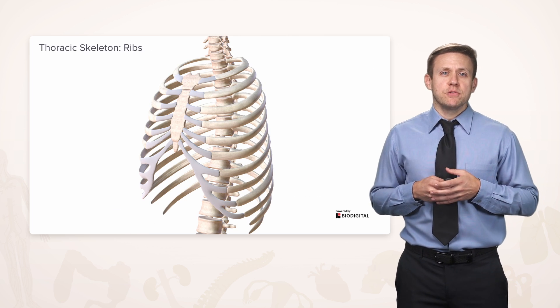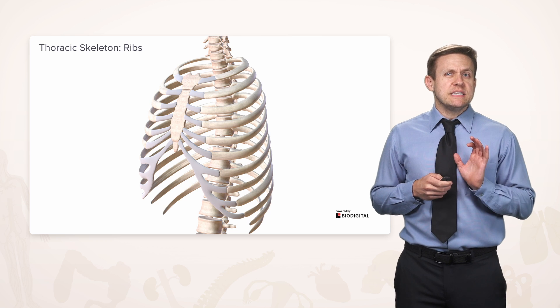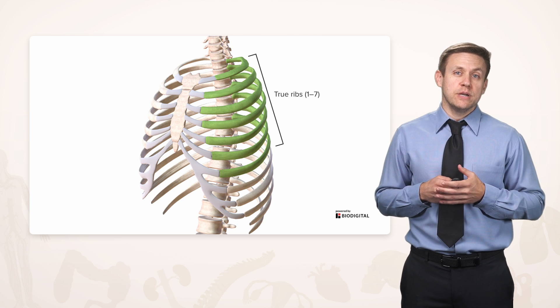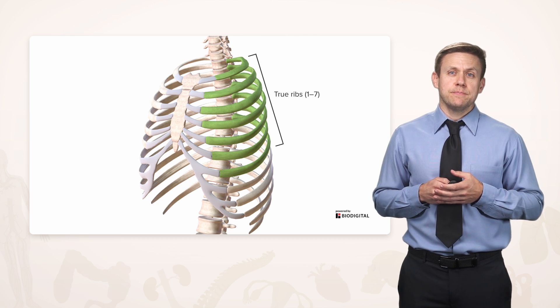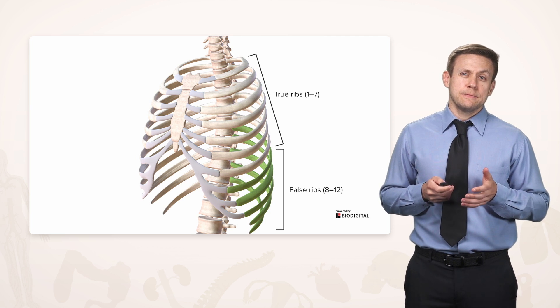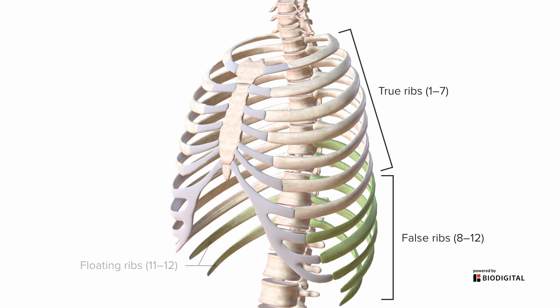Ribs are subclassified as true ribs if they are the 1st through 7th, because they attach directly to the sternum. Ribs 8 through 12 are false ribs because they don't attach directly. Furthermore, ribs 11 and 12 are called floating ribs, in contrast to ribs 8, 9, and 10, which attach to each other and eventually up to the 7th rib via interchondral joints, giving them at least an indirect connection to the sternum.